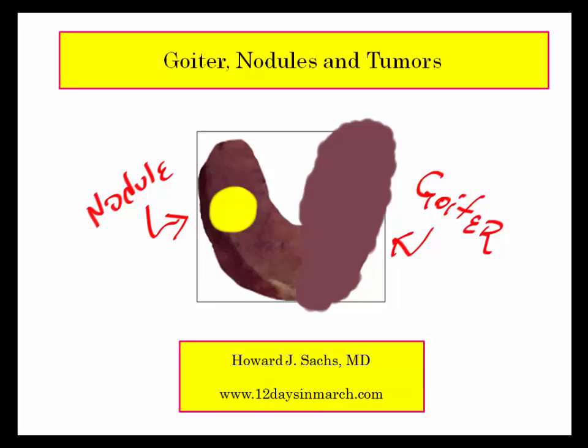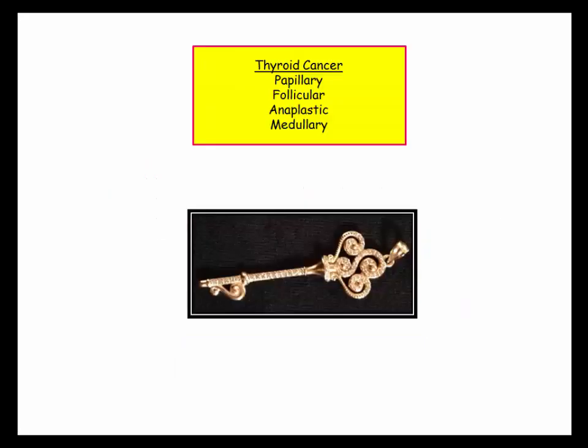I'm going to resume our discussion of goiter, nodules, and tumors, picking up where we left off at thyroid malignancies. There are basically four tumors you need to know. If you can only remember one, please focus on papillary carcinoma, seeing how it is most common and has unique and fun pathology features. Unique makes them great fodder for the NBME.